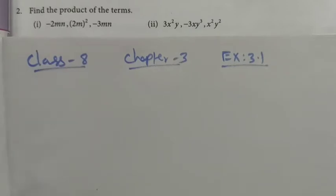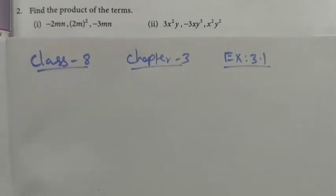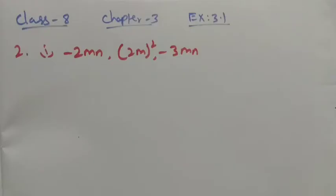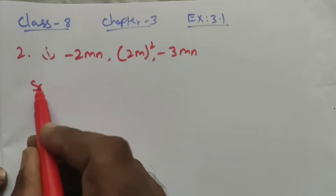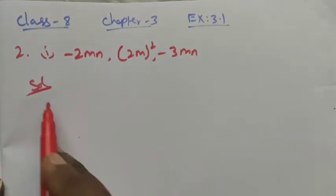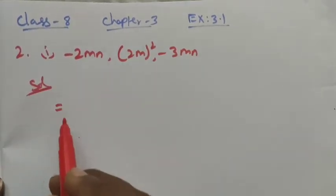Hi students, Class 8, Chapter 3, Exercise 3.1, Question number 2: find the product of the terms. Here we have two Roman numbers. Let's see them one by one. The first Roman number is given as minus 2mn, then 2m whole square, and then minus 3mn. They ask us to find the product of the given terms.